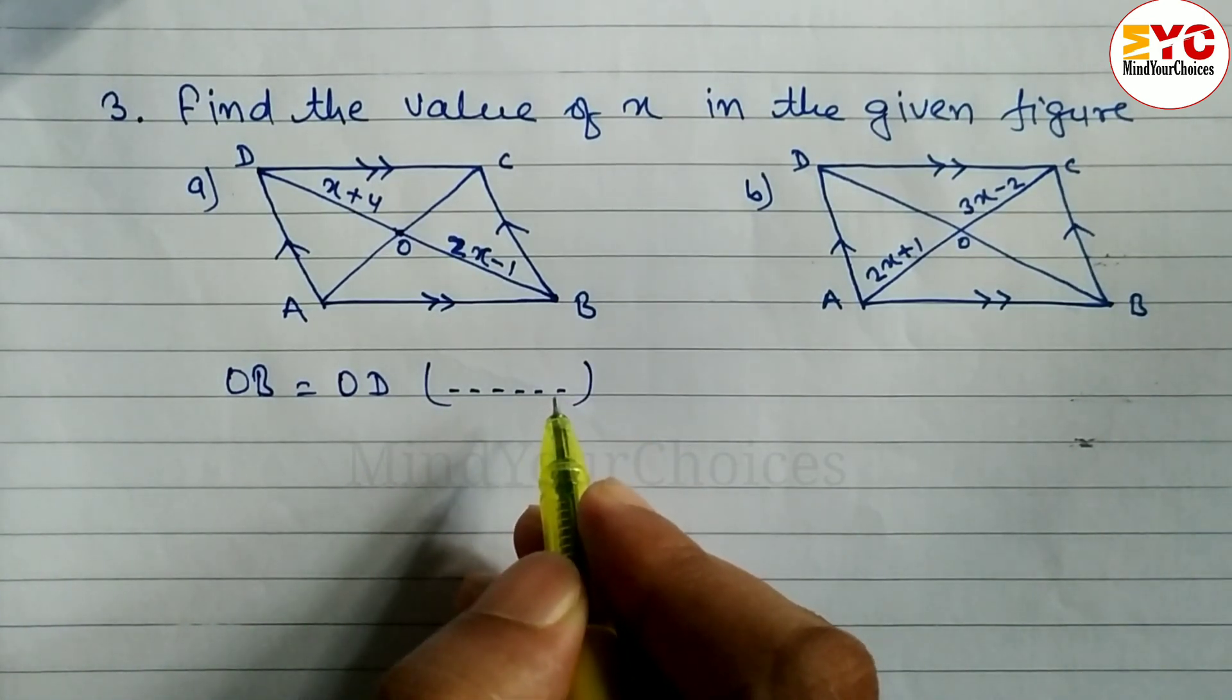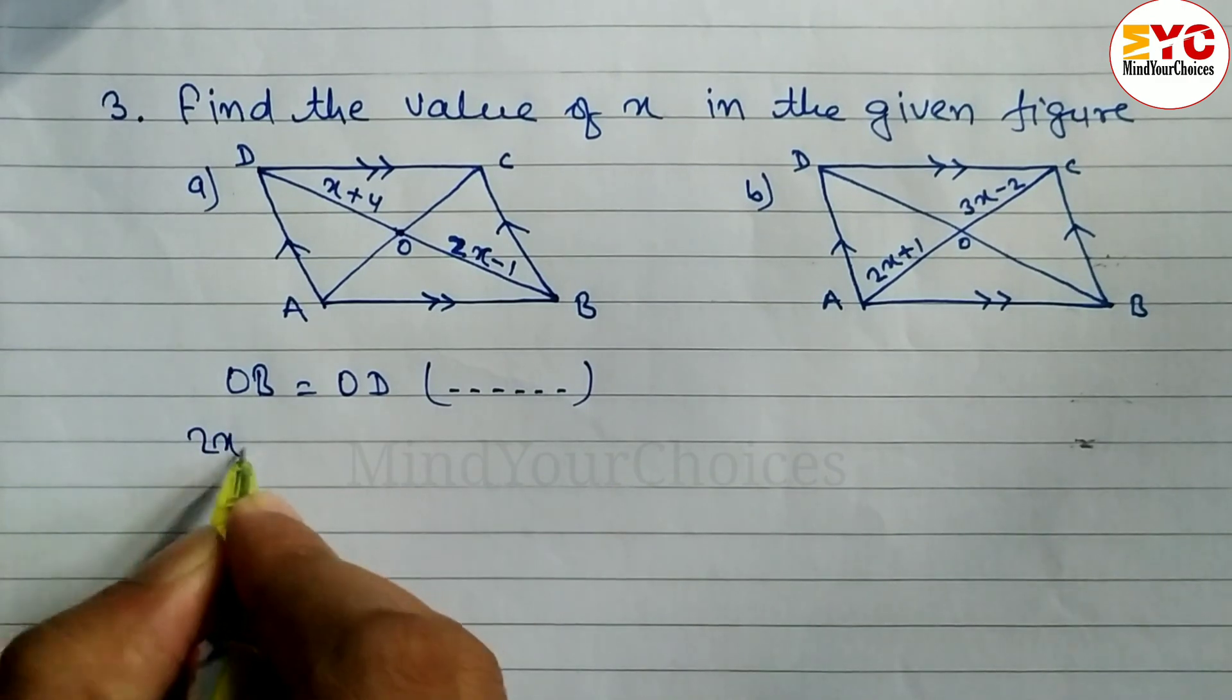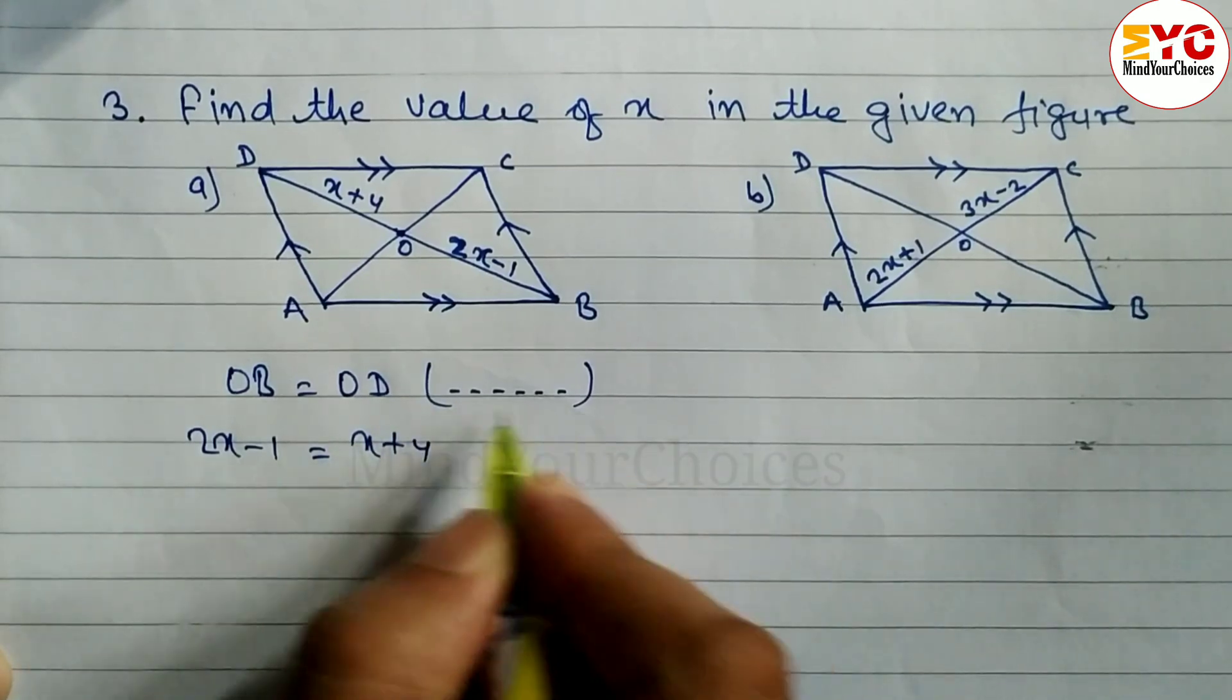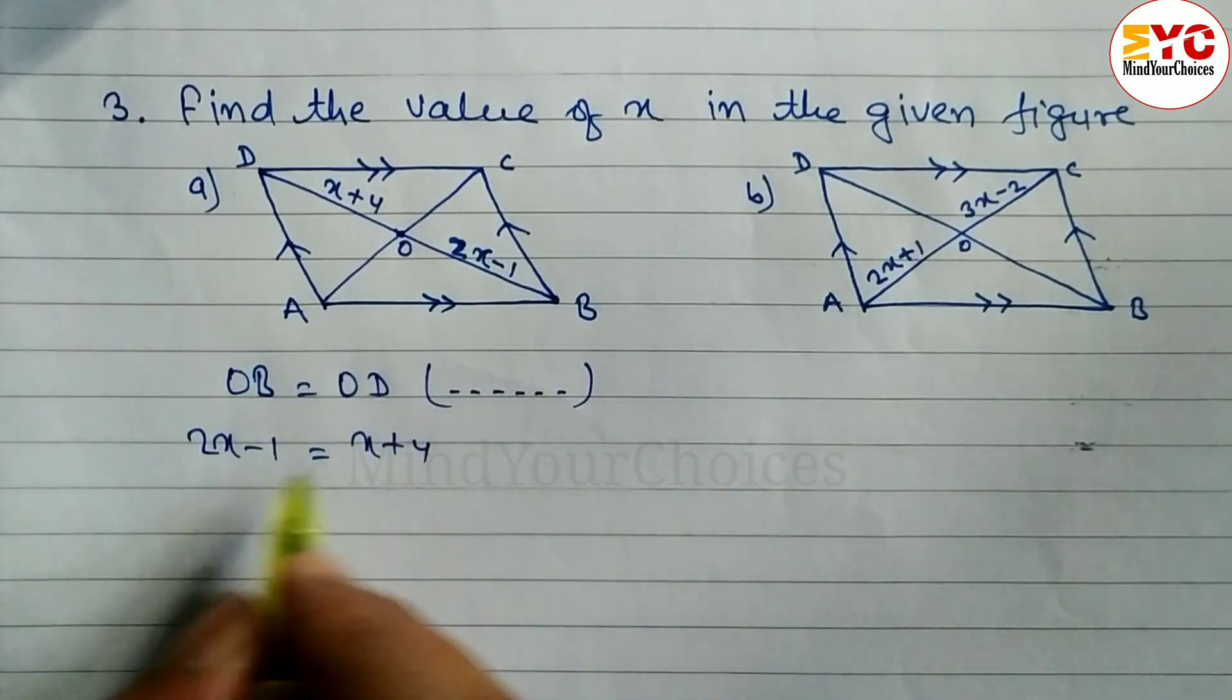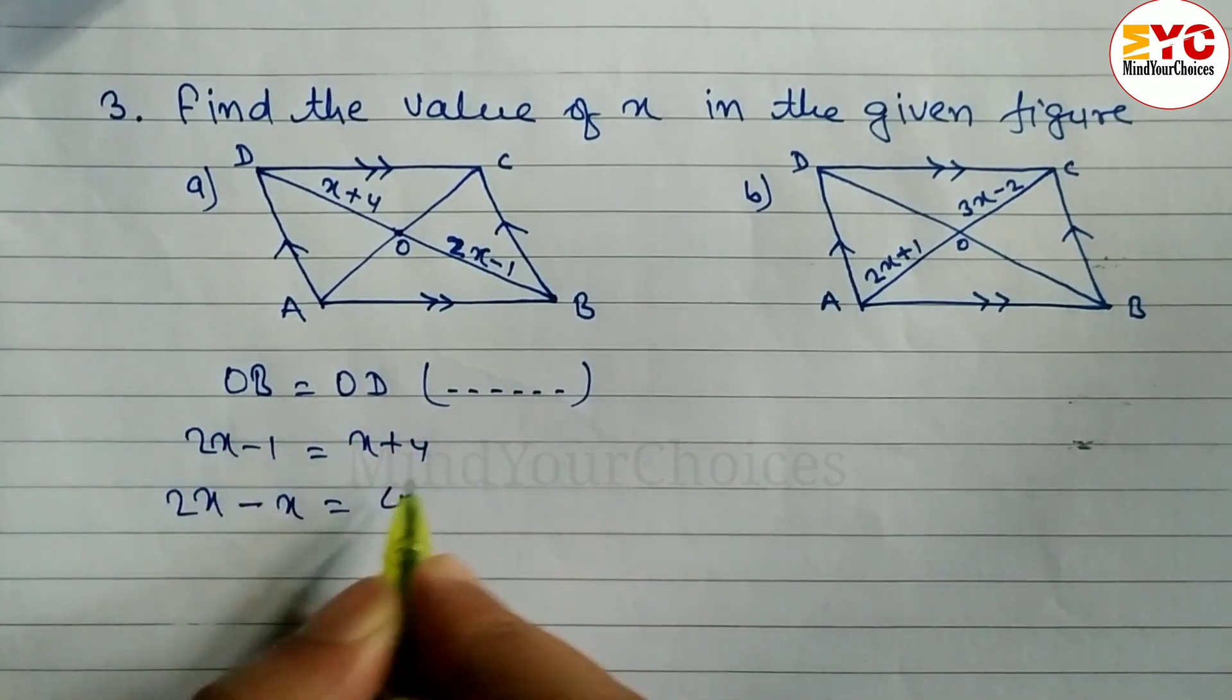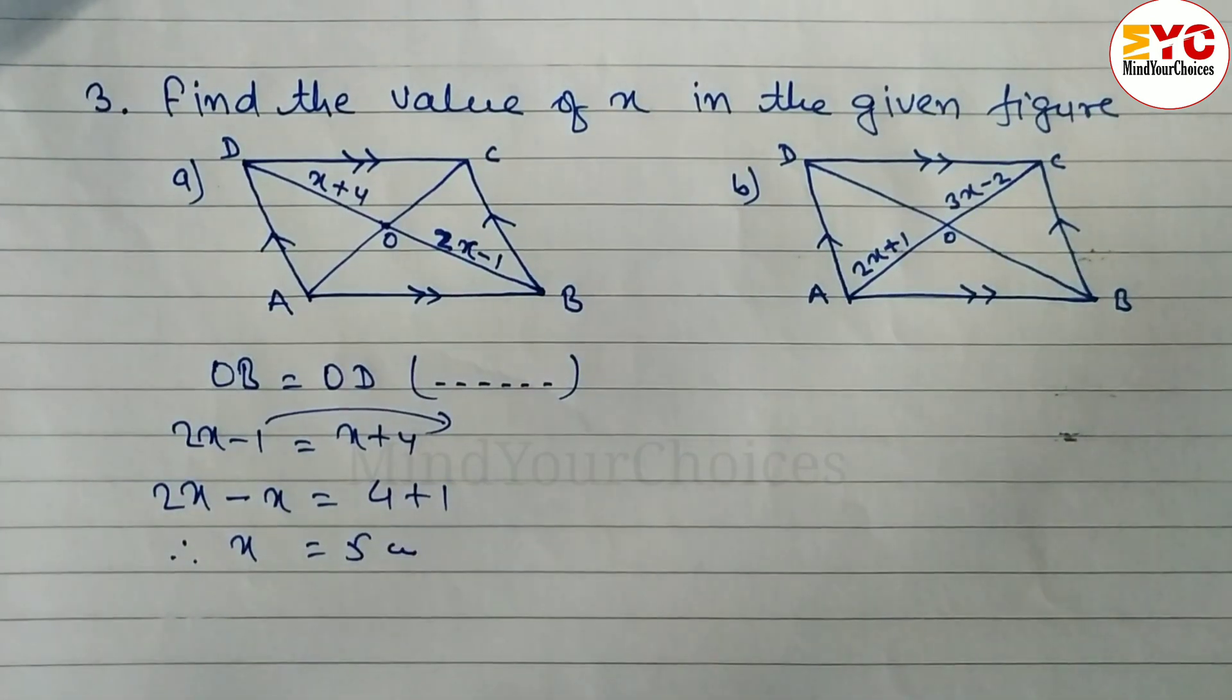We have to write here. So what is the value of OB? OB is here, 2X minus 1, and the value of OD is equal to X plus 4. So in the reason you have to write down: diagonals of a parallelogram bisect each other. And here, just we have to solve and we get the value of X. So 2X minus X is equal to 4. Here is minus 1, so when you take it to the other side we have to write plus 1. When you subtract, we get X is equal to 5 centimeters.